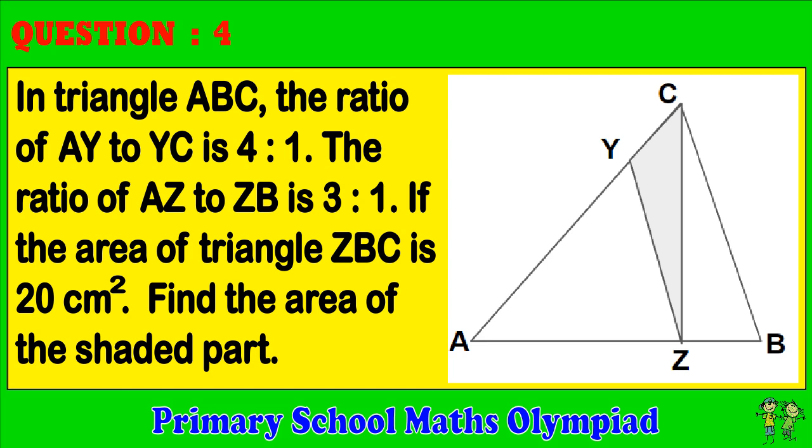Question 4: In triangle ABC, the ratio of AY to YC is 4 to 1. The ratio of AZ to ZB is 3 to 1. If the area of triangle ZBC is 20 cm squared, find the area of the shaded part.